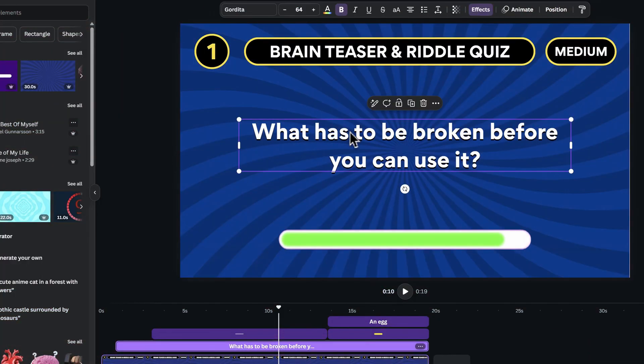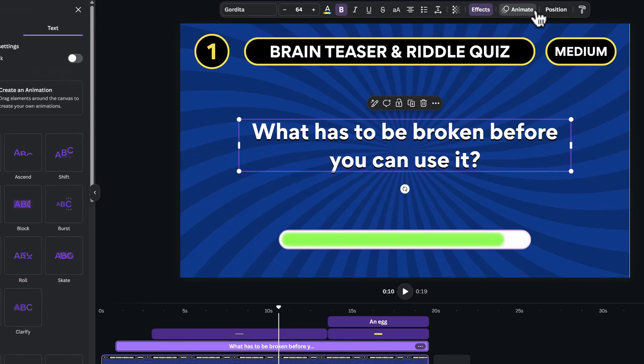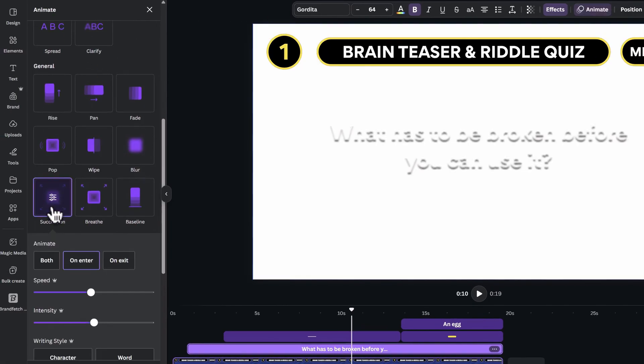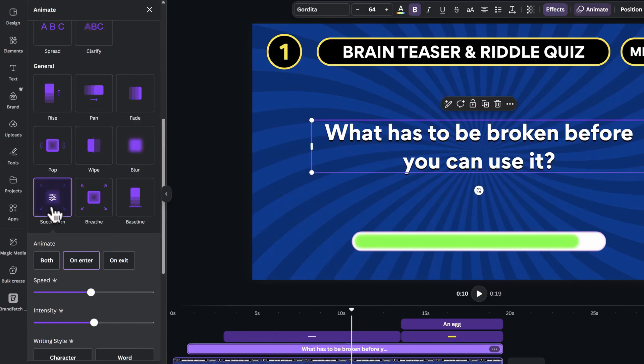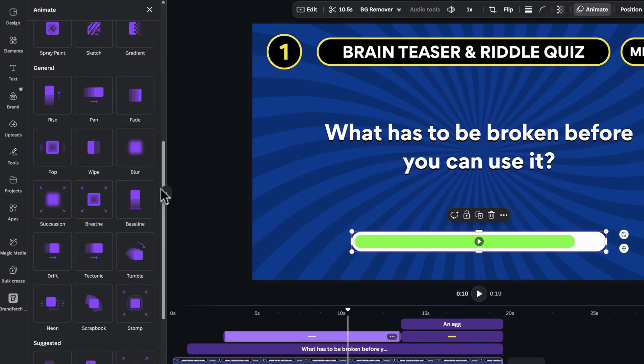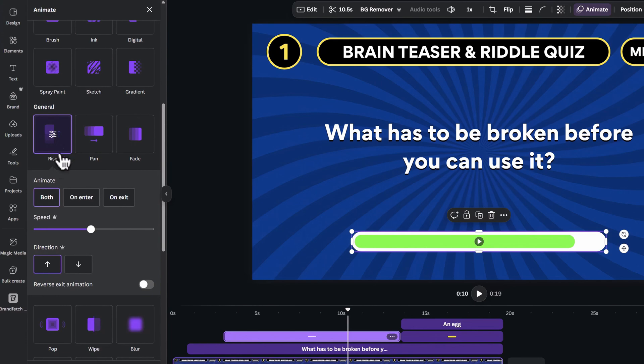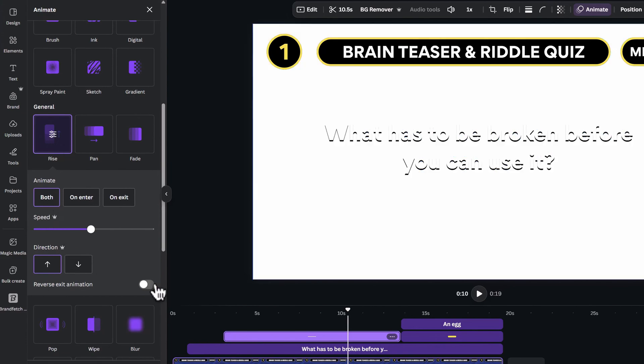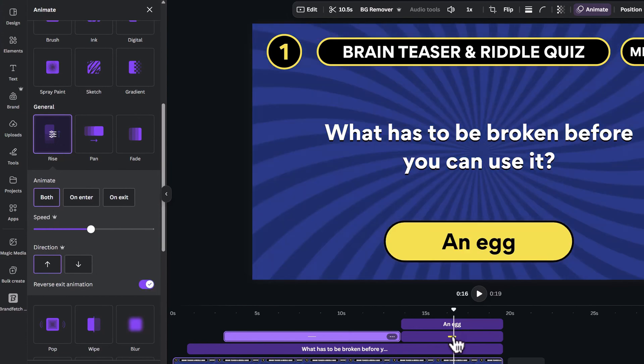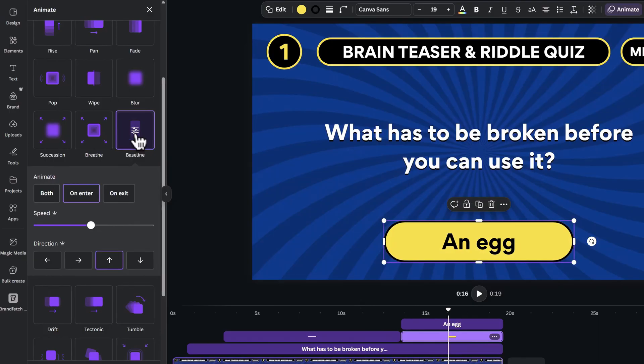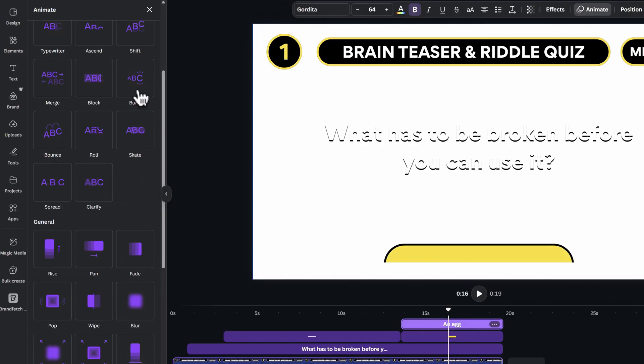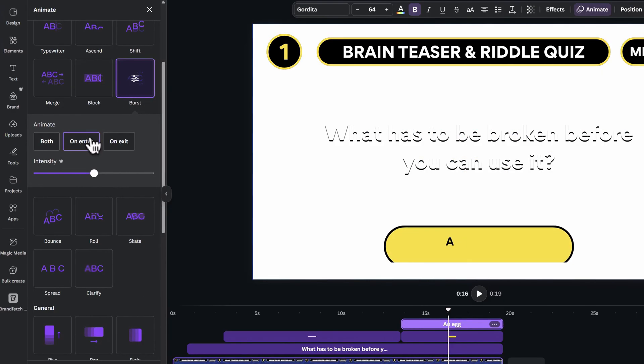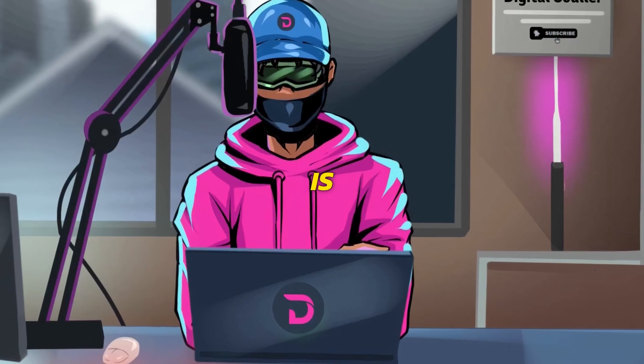The next step is to add the animations. So click on the riddle text, then go to animate at the top, and choose succession. Leave it at the default value, then click on the loading bar, and choose the rise animation for it. Leave it on both and reverse the exit animation. Click on the answer background, choose baseline animation for it, and leave it on enter. Click on the answer text, choose the burst animation, and leave it on enter as well.